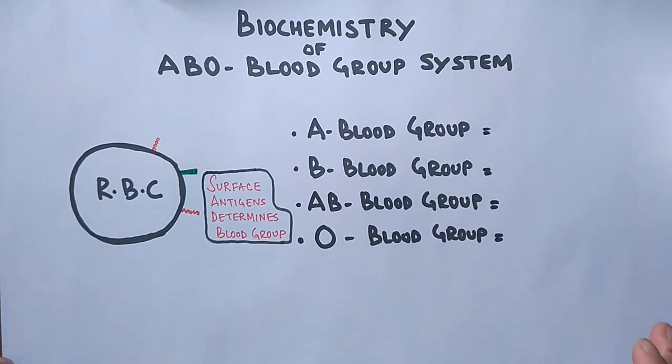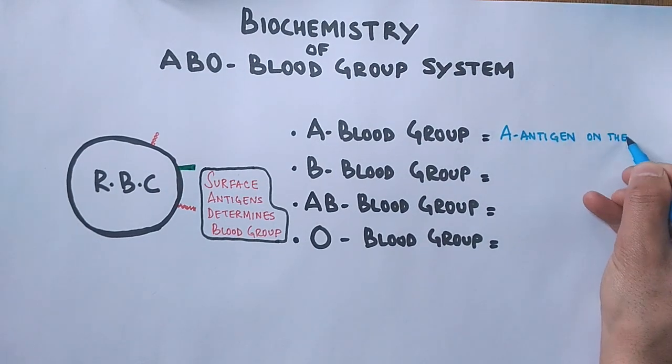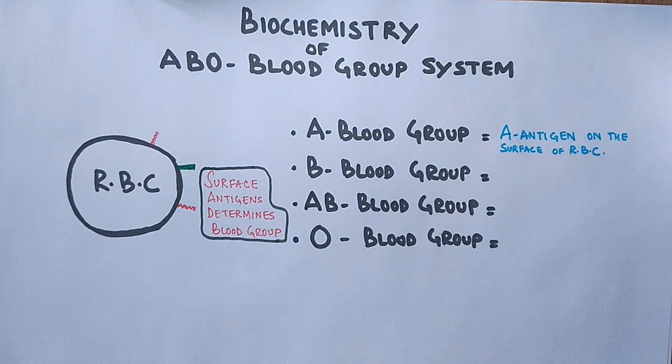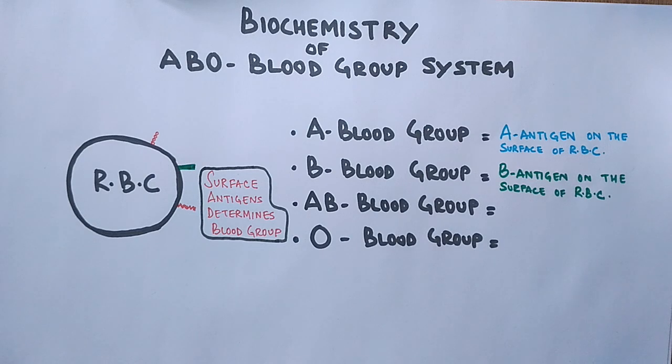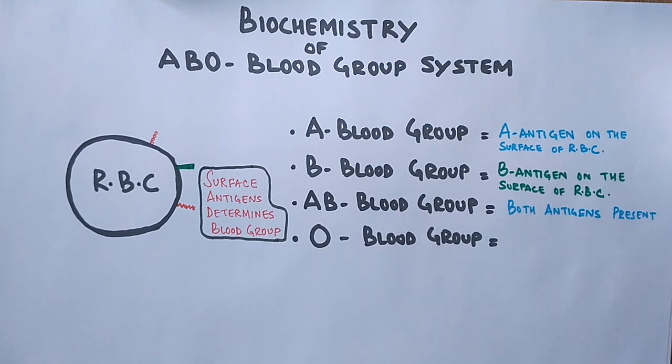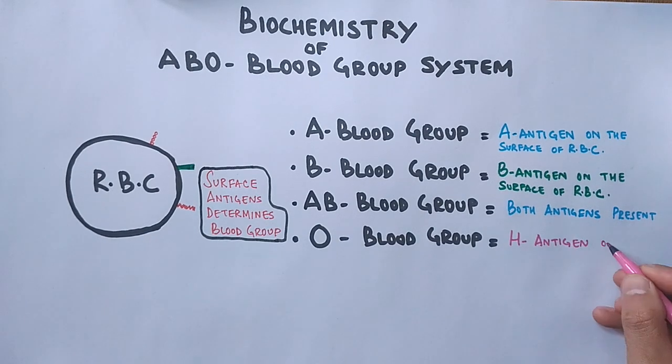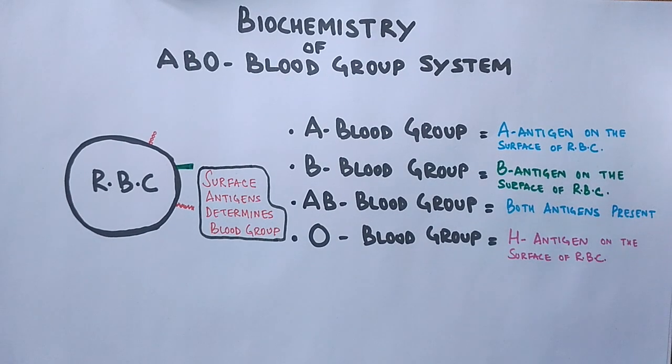In case of A blood group individuals, the A antigen is present on the surface of erythrocytes. In case of B blood group individuals, the B antigen is present on the surface of RBCs. In case of AB individuals, both antigens are present. And in O individuals, the H antigen is present on the surface of RBCs.